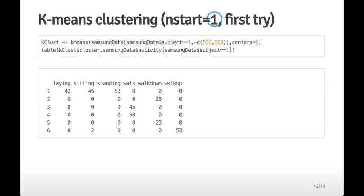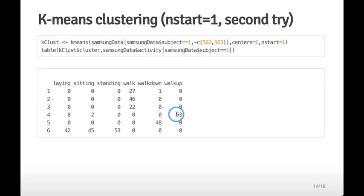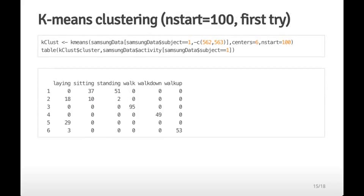Running the exact same k-means command again with one start and six centers on the same data produces a different set of clusters. Cluster one now has mostly walking variables plus one walk-down; walk is spread across clusters one through three; walk-up is primarily cluster four with some laying and sitting; laying, sitting, and standing are hard to distinguish and spread across cluster six. The cluster assignments are very different from the first run, illustrating the instability of a single random start.